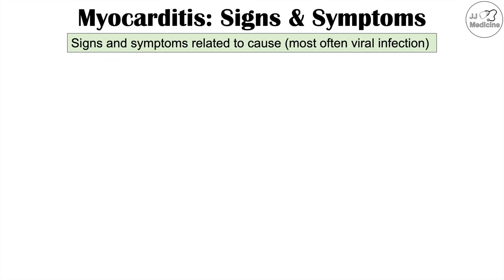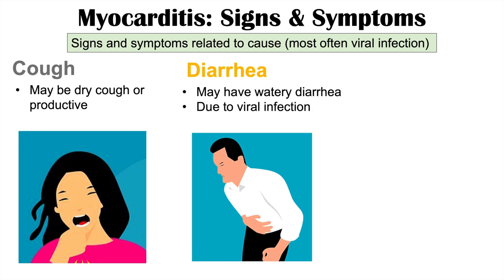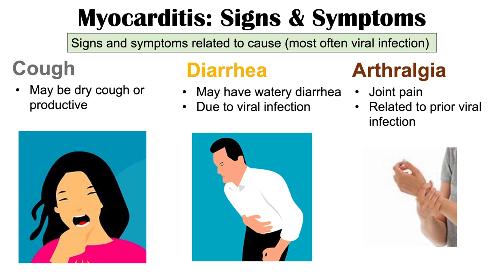There can also be signs and symptoms related to the underlying cause of myocarditis. Since the most common known cause is a viral infection, associated symptoms can include a dry or productive cough, watery diarrhea, and arthralgias, which are joint pains. These signs and symptoms often occur before the onset of myocarditis, as they are due to the viral infection that precedes it. Other causes such as autoimmune conditions like lupus or medications can also produce associated findings related to the underlying cause.